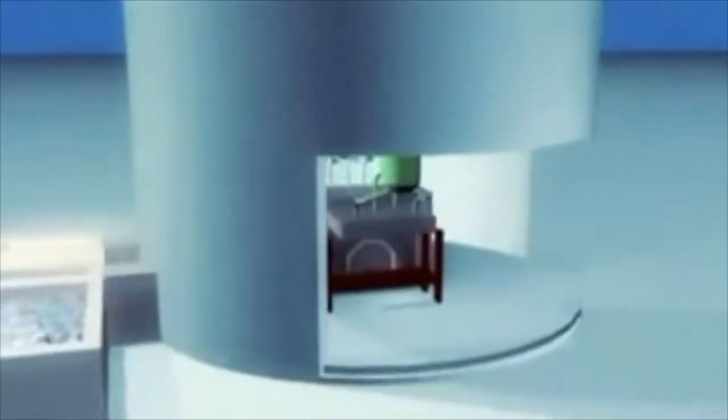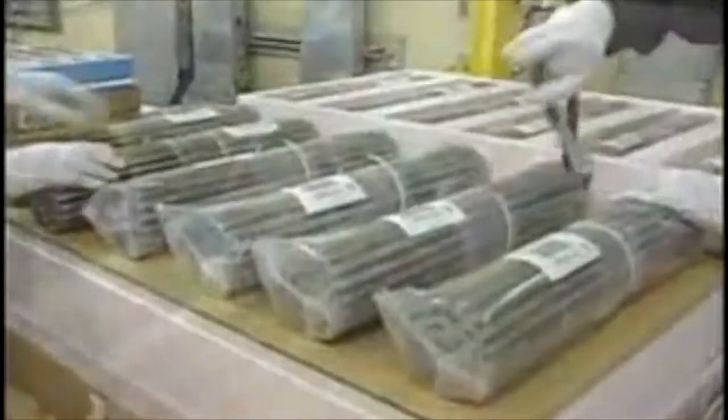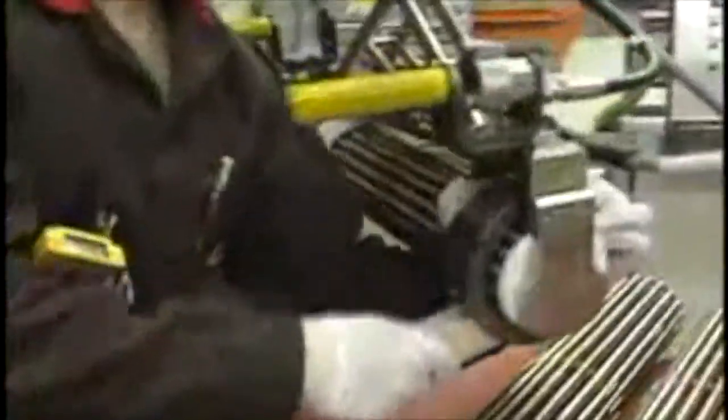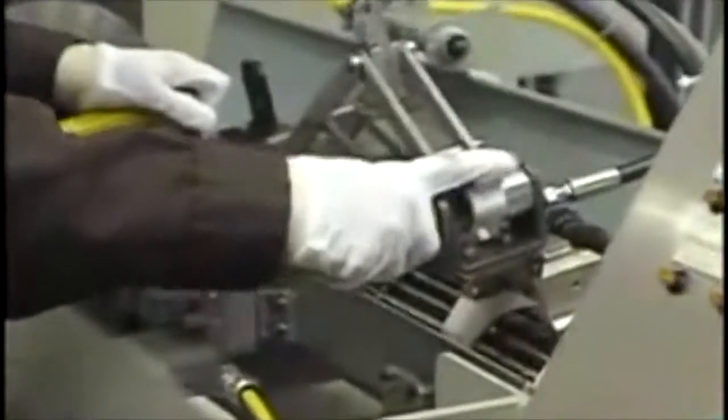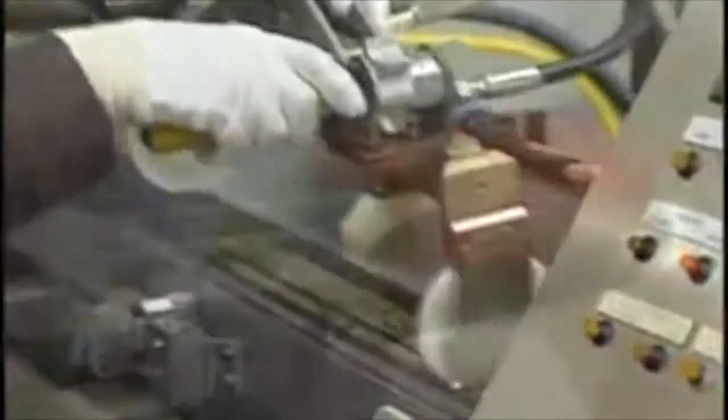The fueling for the ACR1000 starts with the arrival of new fuel bundles in the new fuel loading areas located next to the containment building. Here, the bundles are removed from their packaging and thoroughly inspected. The field operator tracks each bundle by its unique serial number.